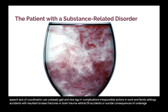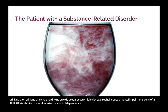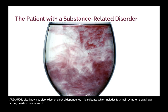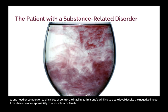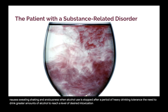Complications include irresponsible actions in work and family settings, accidents with resultant bruises, fractures or brain trauma, vehicular accidents, or suicide. Consequences of underage drinking include binge drinking, drinking and driving, suicide, sexual assault, high-risk sex, and alcohol-induced mental impairment. Signs of AUD include four main symptoms: craving — a strong need or compulsion to drink; loss of control — the inability to limit one's drinking; physical dependence — withdrawal symptoms such as nausea, sweating, shaking, and anxiousness; and tolerance — the need to drink greater amounts to reach a desired level of intoxication. Other signs include amnesia and binge drinking.